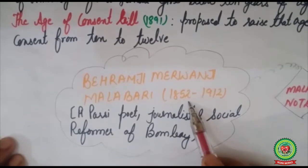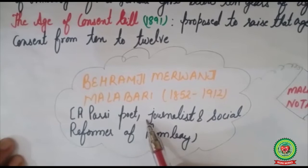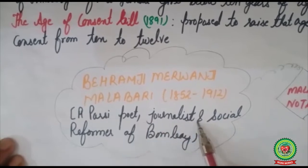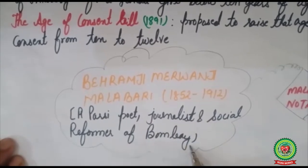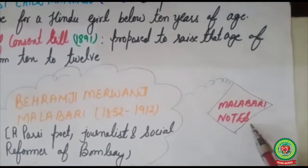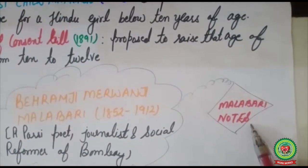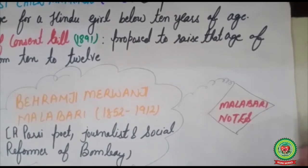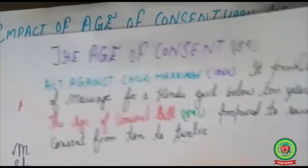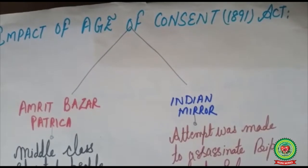Behramji Malabari was born in 1852 and died in 1912. He was a Parsi poet, journalist, and social reformer of Bombay. He published two journals called the Malabari Notes, through which he presented the miseries of young Indian girls to the British government. Because of his efforts, the Age of Consent Bill was passed in India in 1891.